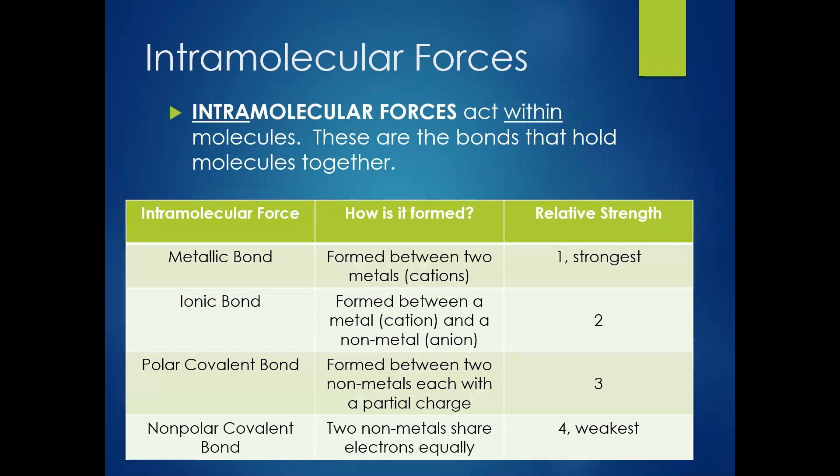So all this time, we've been learning about intramolecular forces. These are forces that act within molecules. The prefix intra means inside. And these are bonds that hold our molecules together from the inside. So there are technically four types of bonds. We have now learned about all of them. There's metallic, ionic, polar covalent, nonpolar covalent. You'll remember a metallic bond is formed between two metals, cations, and this is actually the strongest type of intramolecular force.